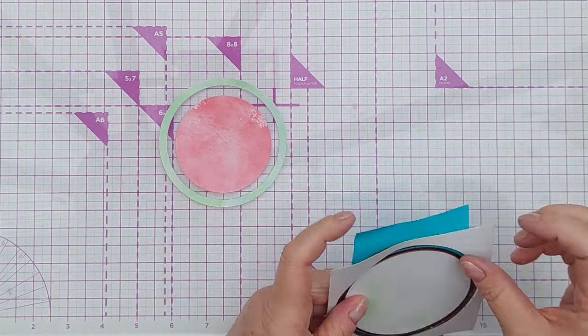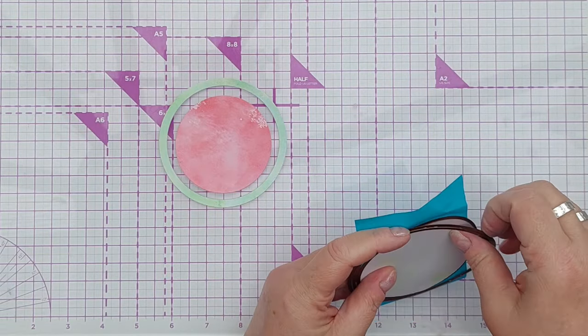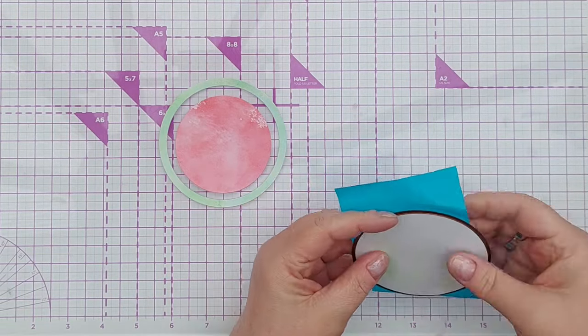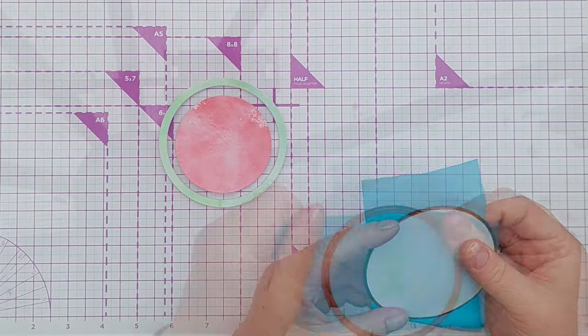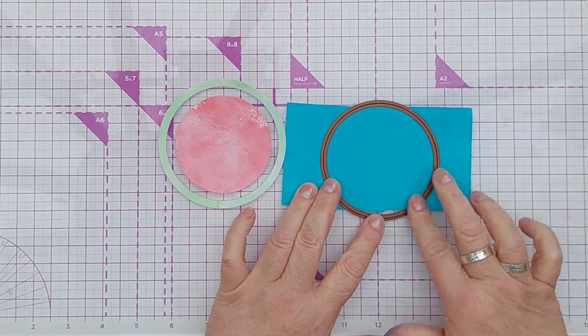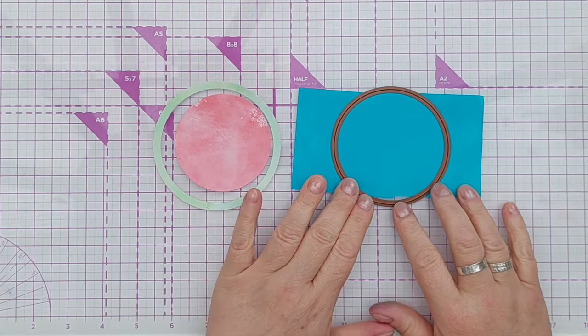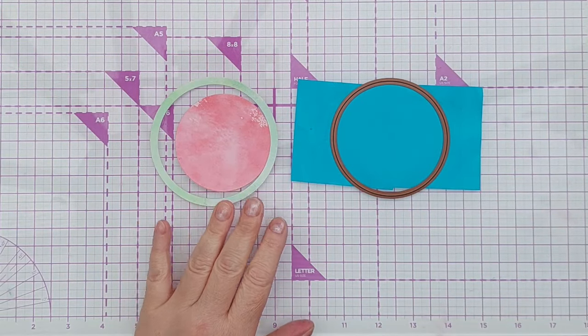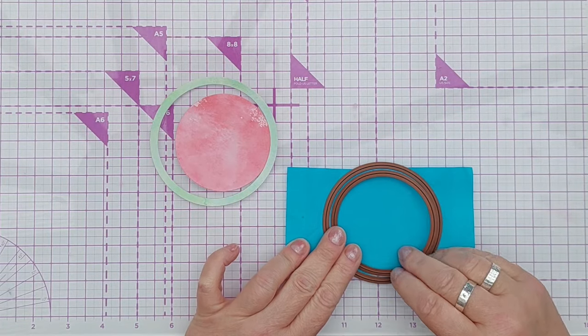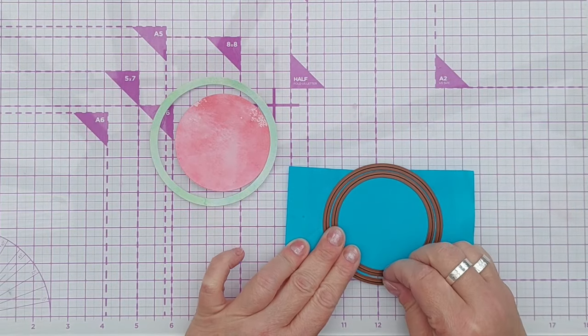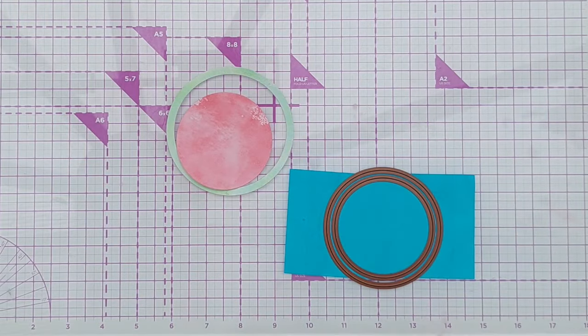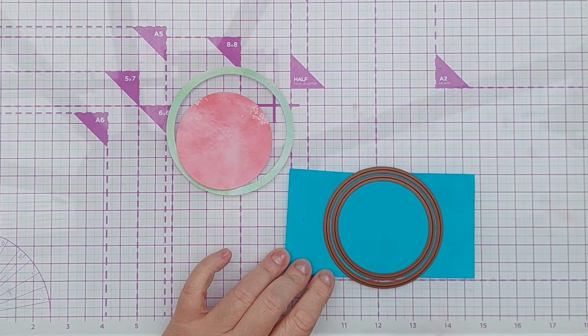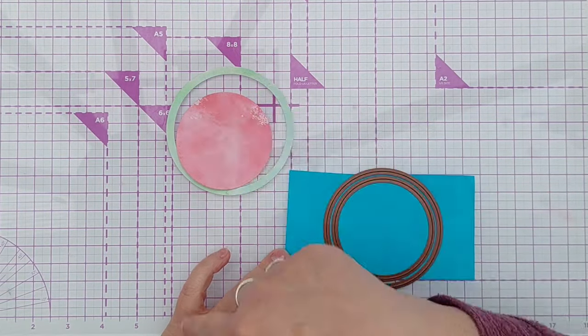What I want now is an inner white ring between those two. So I'm going to take the second largest ring, the one that cut the inner edge of the green, and place the circle that I used to cut the red, and now I'm going to cut that out of white cardstock so I get the inner white ring.